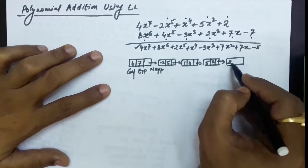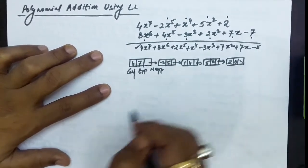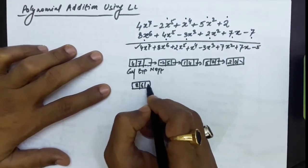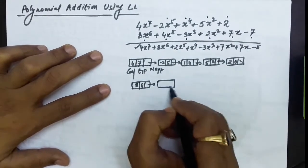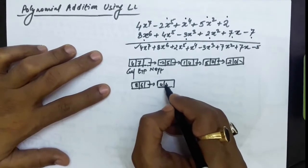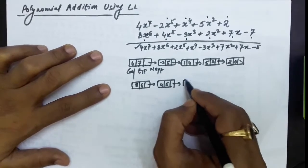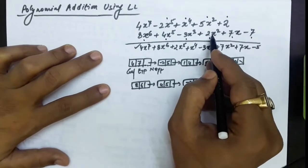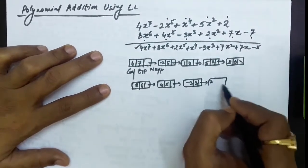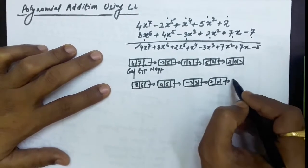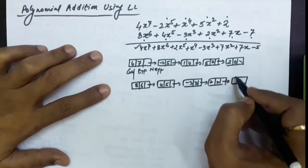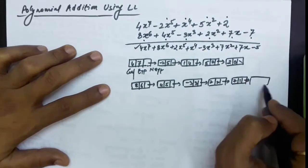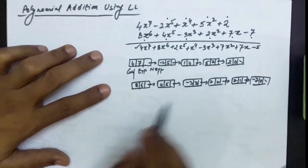For the last term of the first polynomial, 2 is the coefficient and 0 is the exponent. For the second polynomial: 8 is the coefficient and 6 is the exponent; 4 is the coefficient and 5 is the exponent; minus 3 is the coefficient and 3 is the exponent; 2 is the coefficient and 2 is the exponent; 7 is the coefficient and 1 is the exponent; and minus 7 is the coefficient and 0 is the exponent.